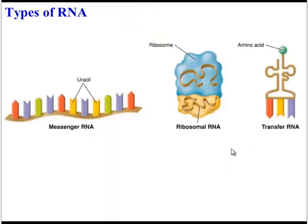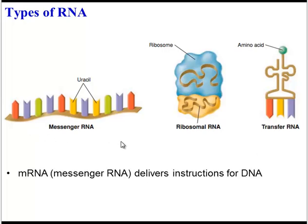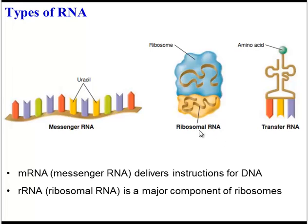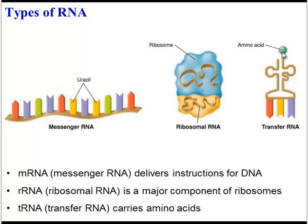There are three different types of RNA in your body. The first is messenger RNA, or mRNA, and it delivers instructions from DNA. The second type is rRNA, or ribosomal RNA, and this RNA is found within ribosomes — the organelle that makes proteins. A third type is transfer RNA, or tRNA, and it transfers amino acids.